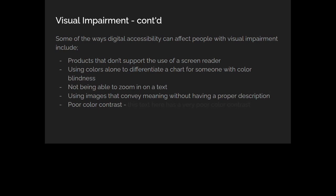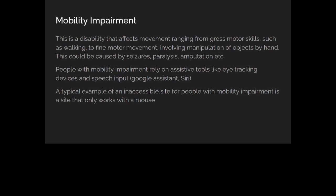Moving on, the second category is mobility impairment — users who have some sort of mobility issue and aren't able to move with their legs or hands. It could be caused by seizures, paralysis, or amputation from an accident. People like this usually rely on assistive technology such as eye tracking, speech inputs, Google Assistant, or Siri. They're often not able to use a mouse or keyboard, so they rely on voice commands. For your product to account for these users, it should not only be accessible with a mouse — make sure you consider people who can only use the keyboard.